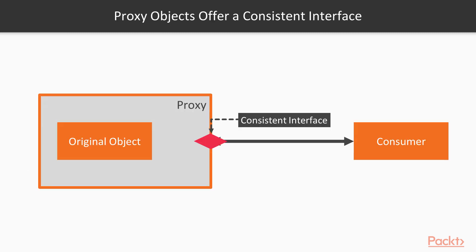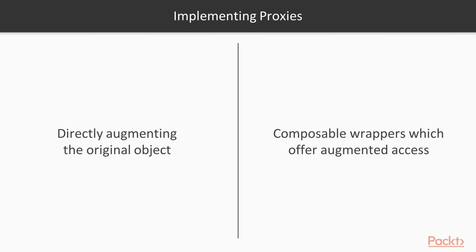The important thing to note is that the interface offered to the consumer remains in-line and consistent with the original object. You can generally apply proxy-like behavior by either directly augmenting an object during access, or through composable wrappers, which are better and safer because they do not modify the original object and are proxies in the most genuine sense of the word.